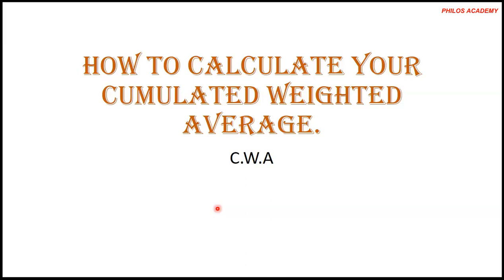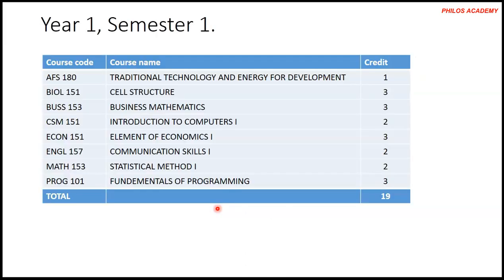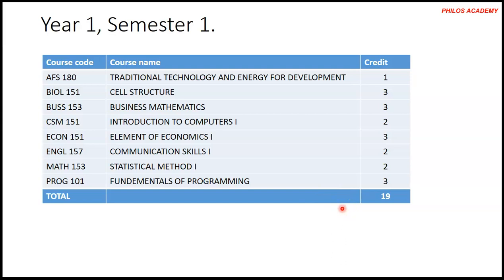Now let's assume these are the courses you are reading for the first year, first semester. Traditional Technology and Energy for Development 1, Cell Structure 3, Business Mathematics 3, Introduction to Computers 2, Elements of Economics 3, Communication Skills 2, Statistical Method 1 which is 2, and Fundamentals of Programming 3. Let's say after your mid-sem and end of sem, everything put together - mid-sem is 30, other things contribute, and end of sem is 70.